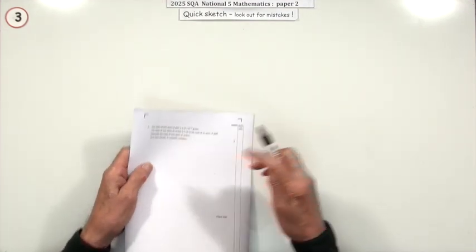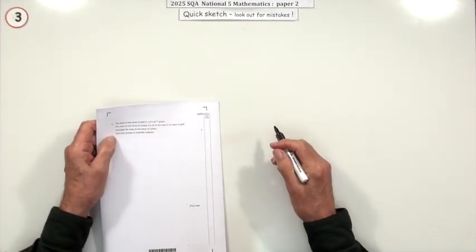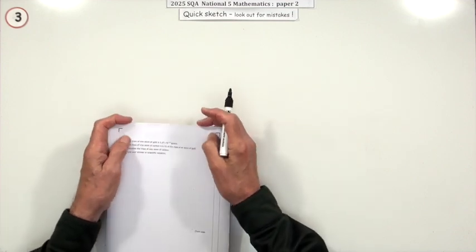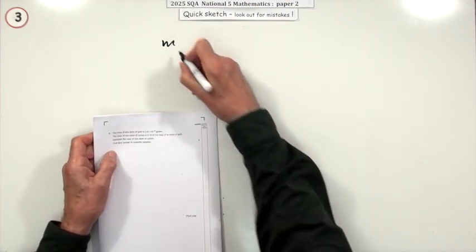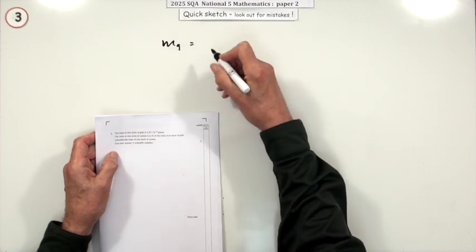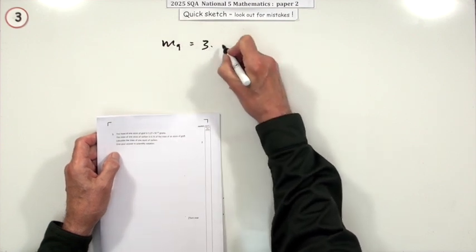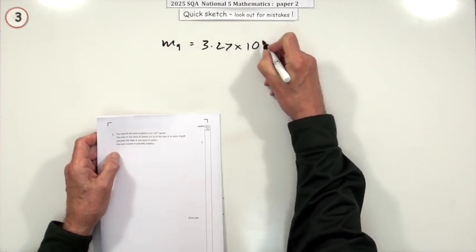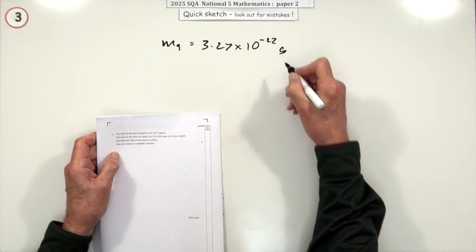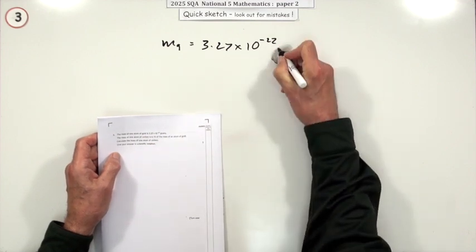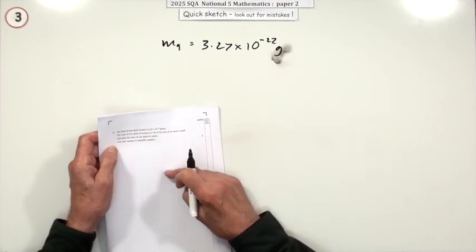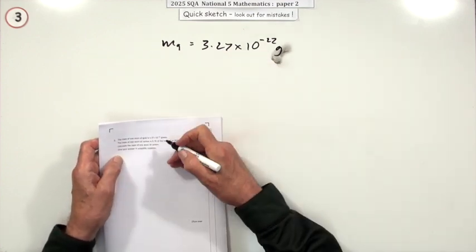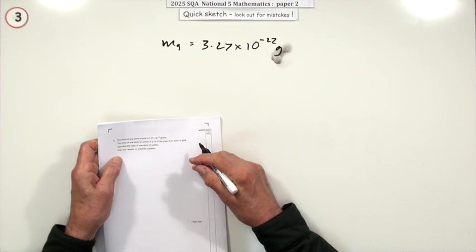So number three. Forgot to change that number last time. Now I don't understand why this question's in paper 2 where you can use a calculator. The mass of a gold atom, I'll just use G instead of AU, is 3.27 times 10 to the negative 22 grams. So that's putting it in scientific notation. You have to give your answer in scientific notation. But your calculator will do that for you.